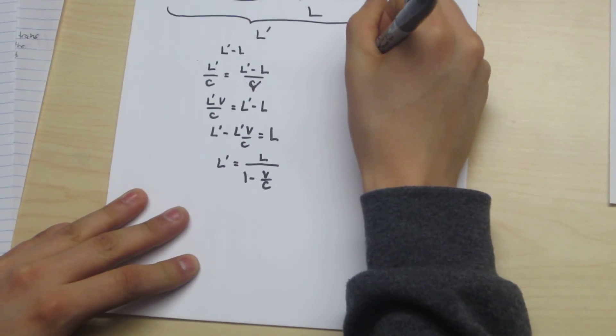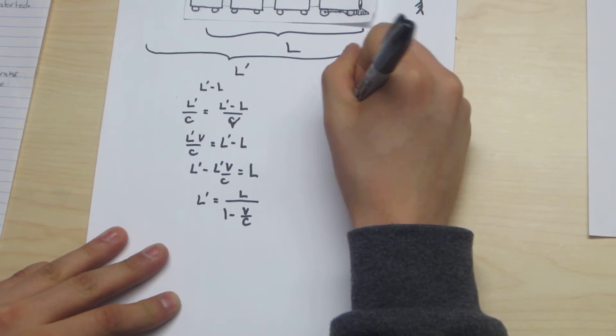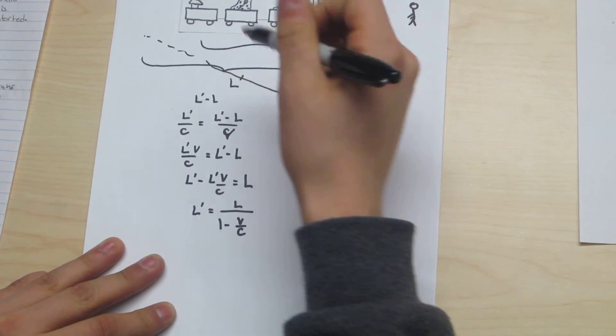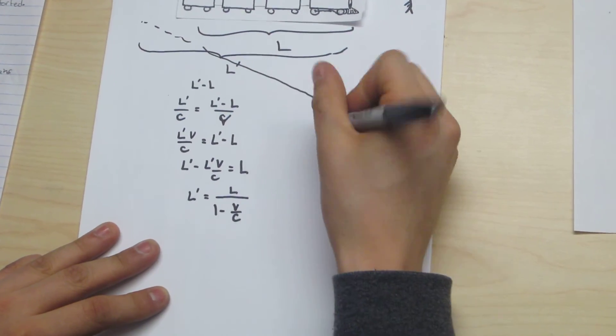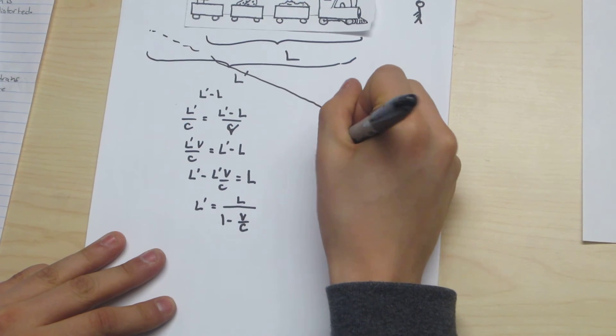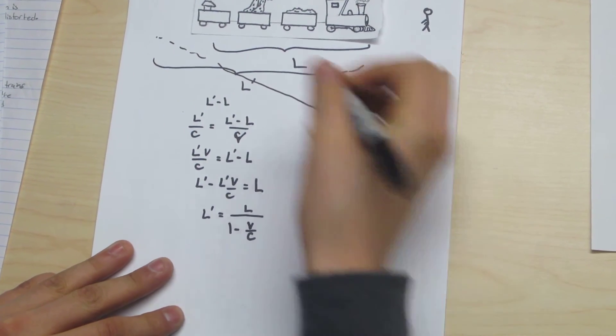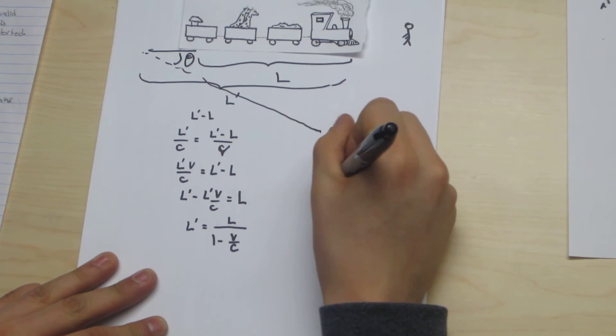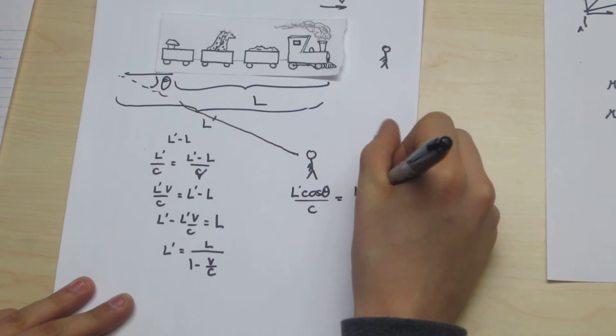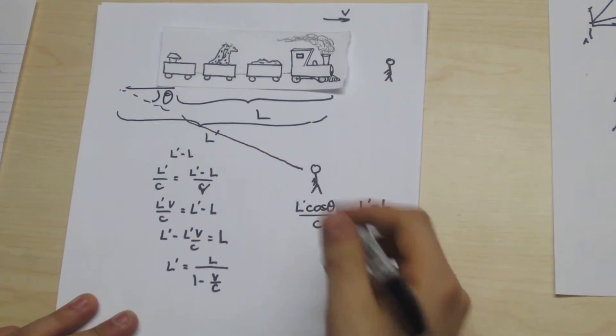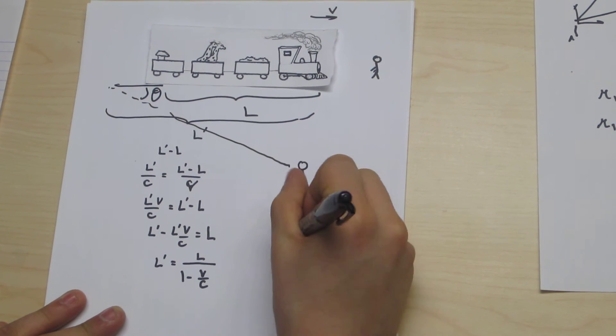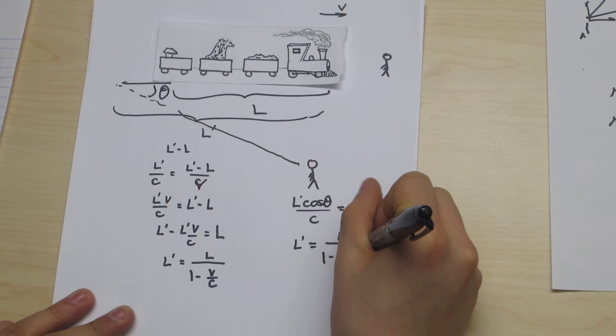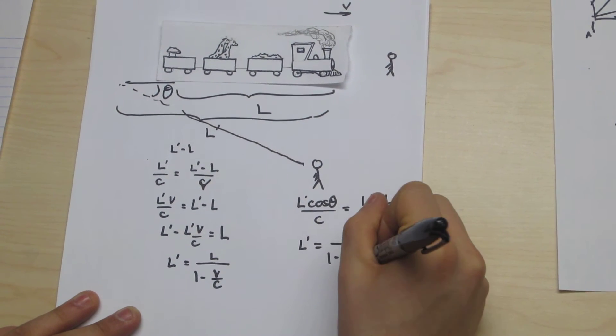Now generalizing this to a more general case with our second observer over here, the light from the caboose that he sees has to move a greater distance l prime cos theta, where here this angle is theta. So l prime cos theta over c is now equal to l prime minus l over v, which we rearrange to get l prime equal to l over 1 minus v cos theta over c.